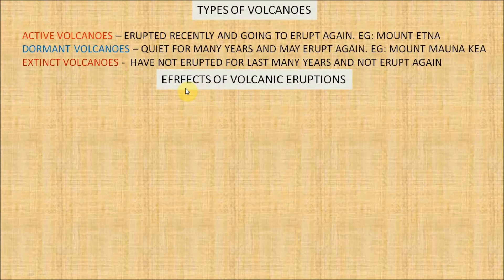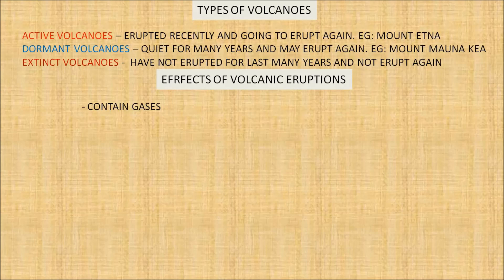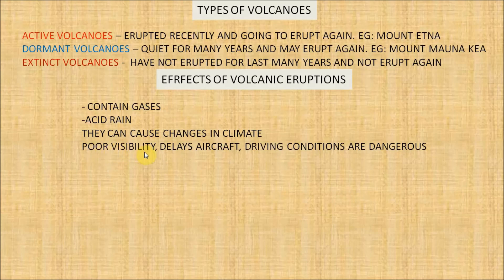Now let's see the effects of volcanic eruptions. Different volcanic eruptions produce different types of effects on environment and society. Volcanic eruptions release gases like sulfur dioxide, hydrogen fluoride, carbon dioxide, hydrochloric acid, and ashes of melted rocks. These gases react with atmospheric water to produce acid rain, which destroys crops and kills living beings. They can cause changes in climate, poor visibility, delays to aircraft, and dangerous driving conditions.